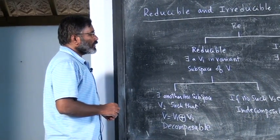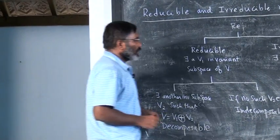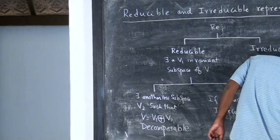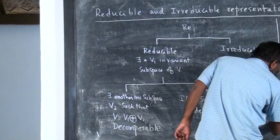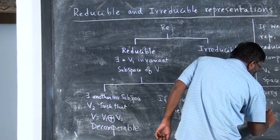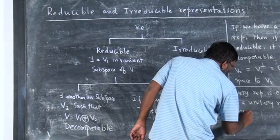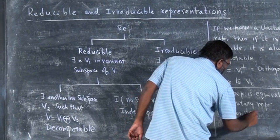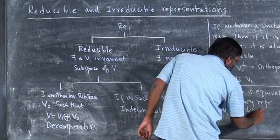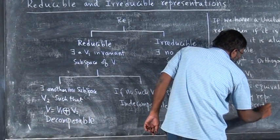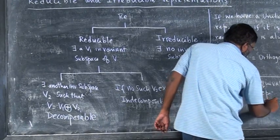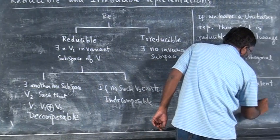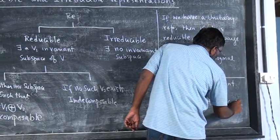Every representation is equivalent to a unitary representation. This is true for discrete and compact continuous groups.